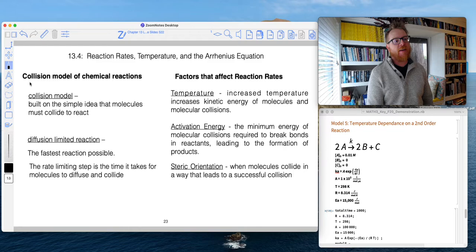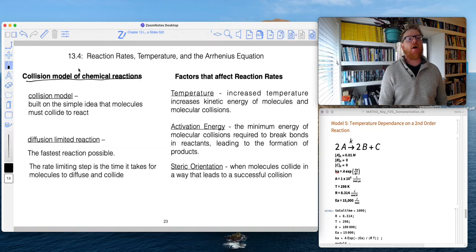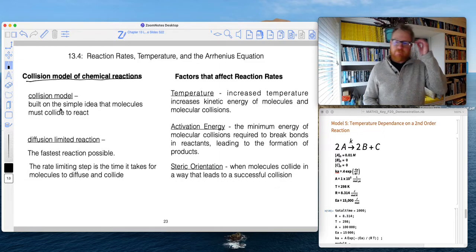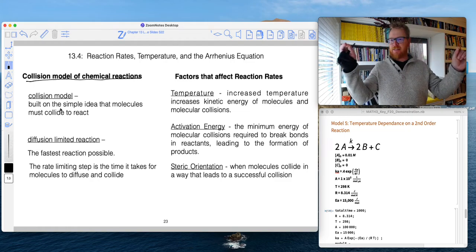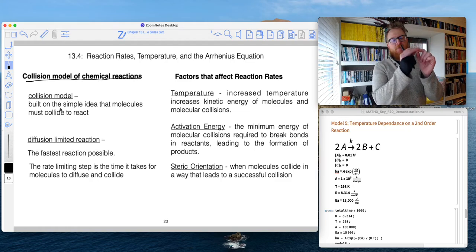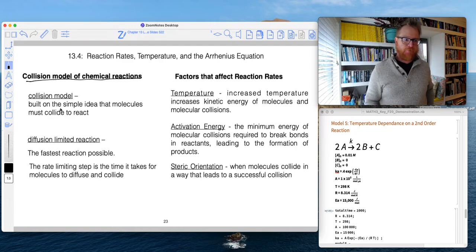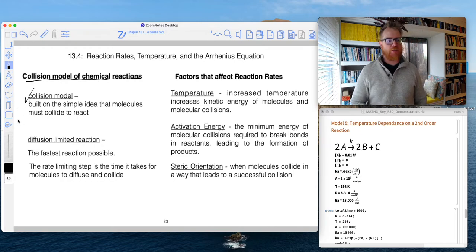And so that is the collision model of chemical reactions. So in this collision model, this is built on the simple idea that molecules must collide to react. Hopefully that is pretty obvious. If not, this is a good first place to start. Molecule A has to find molecule B. They have to diffuse, collide, react. So that's the simplest idea of the collision model.